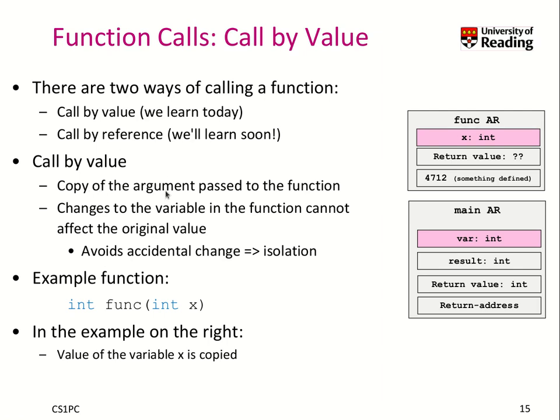What does call by value mean? You have to copy the argument passed to the function. In our example, when I have a local variable here, an argument is actually nothing more than a local variable. When I call this function, I have to copy the actual value into the memory cell on the function activation record.